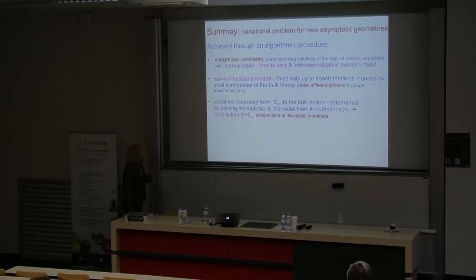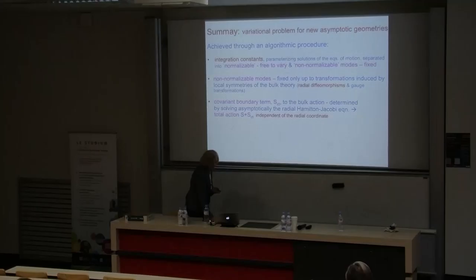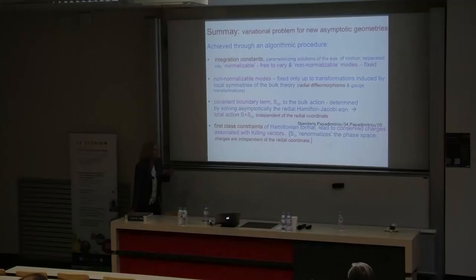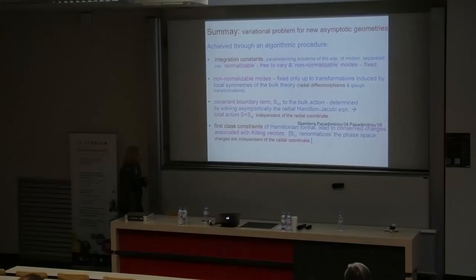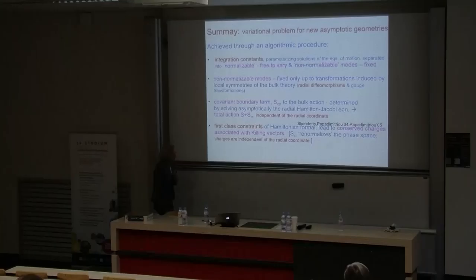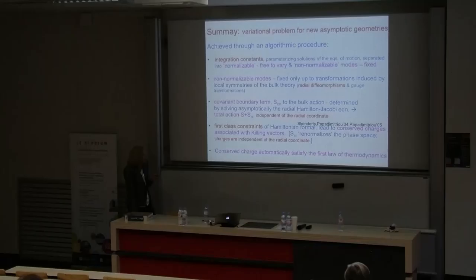Determination of the covariant boundary action by solving equations of motion for the asymptotic solution allows us to identify the full-fledged, radial-coordinate-independent renormalized action. Within this action, we define the renormalized canonical momenta, which are basically conserved charges associated with different asymptotic Killing symmetries of the theory, determined completely by this renormalized action. So it is from this renormalized action that we uniquely determine conserved charges, which then automatically satisfy the first law of thermodynamics for such configurations.